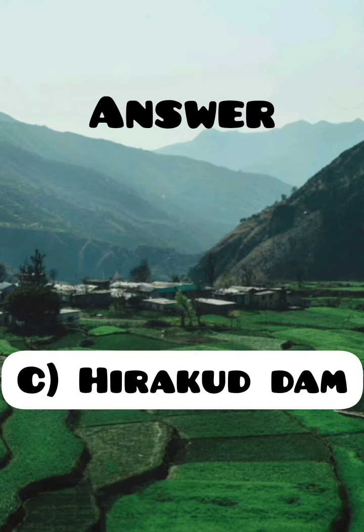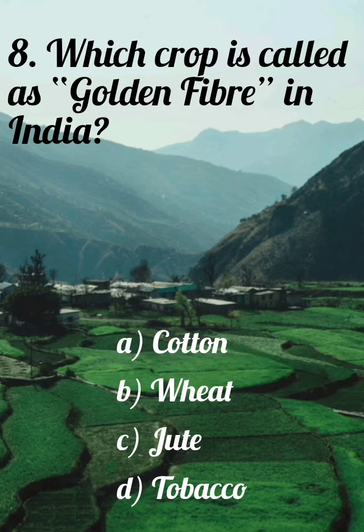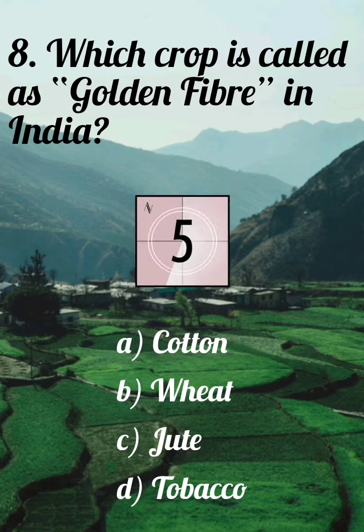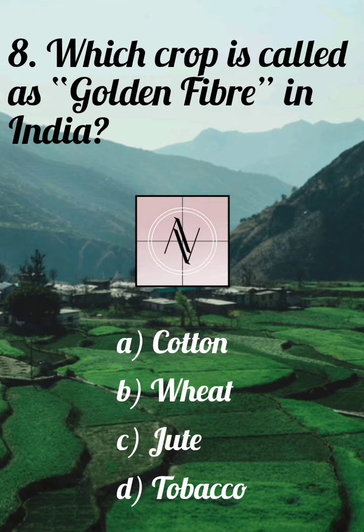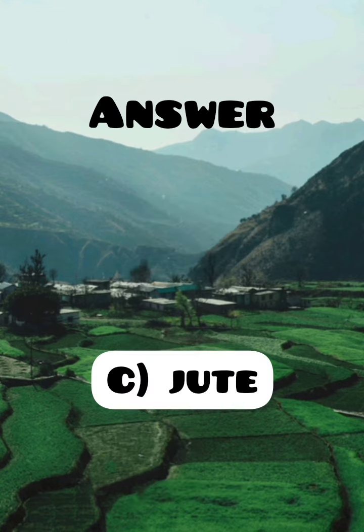Which crop is called the Golden Fiber in India? A. Cotton, B. Wheat, C. Jute, D. Tobacco. Answer: C. Jute.